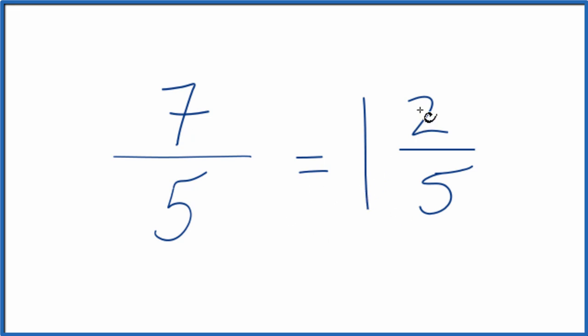And you can check that. 1 times 5, that's 5, plus 2. That gives us the 7. And this 5 just brought it across.